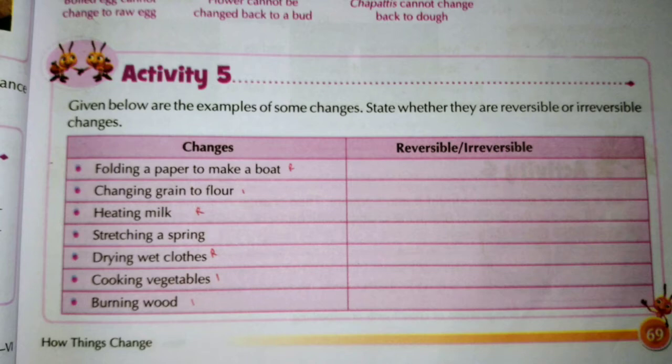The first one is folding paper to make a boat. We have folded paper to make a boat. This is a reversible change — the boat we have made can be unfolded again to get back the original paper. So that is a reversible process and you have to write 'reversible.'